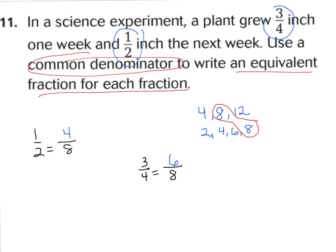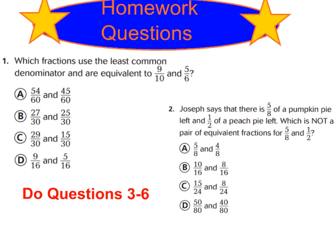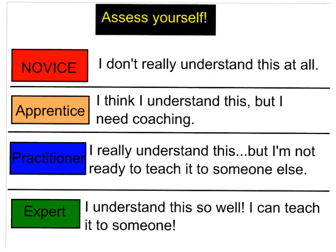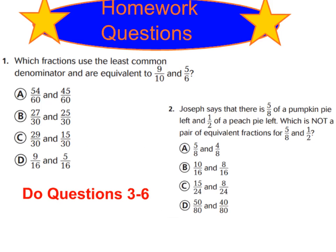Let's move on to the back side now. Go ahead and answer questions one and two — read the questions carefully. Then do questions three through six for review. I encourage you to write at the top of the page whether you are a one, two, three, or four for the different levels of how you feel, because I like to glance at that as I come around and check. Tomorrow in class we're going to do some practice problems to get really good at finding common denominators.